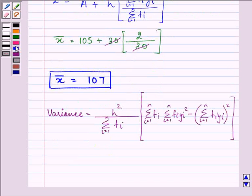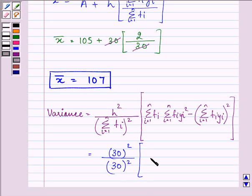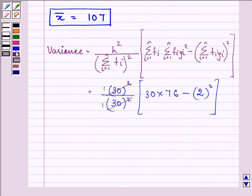Now this is the formula for variance. We will be substituting the values here also. So we have h as 30, so it will be 30 square upon summation fi which is also 30. So it will be 30. The whole squared into summation fi is 30. Summation fi yi square is 76, minus summation fi yi is 2, so it will be 2 the whole squared. Simplifying we have 30 times 76 giving us 2280 minus 4. So we have the variance as 2276.